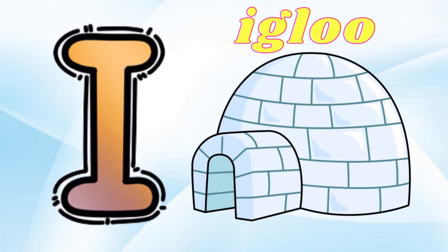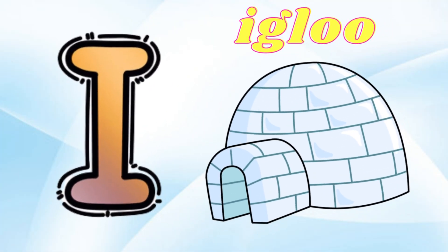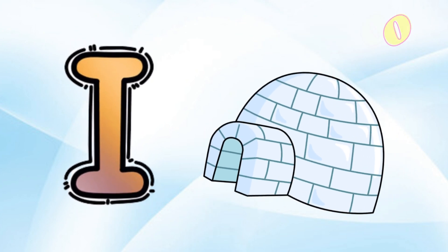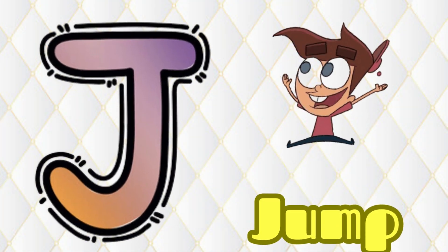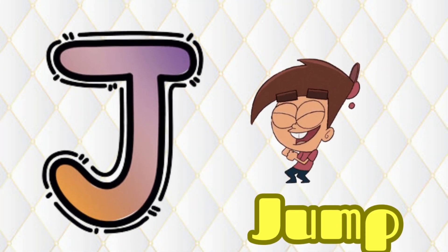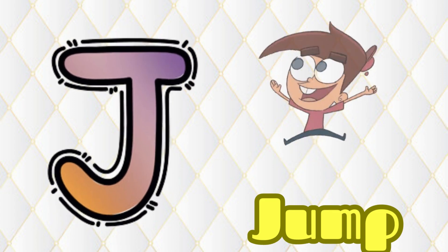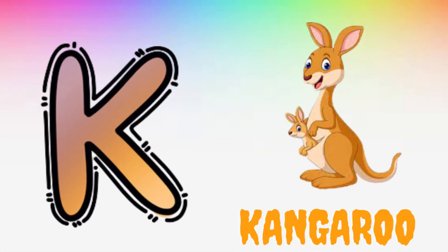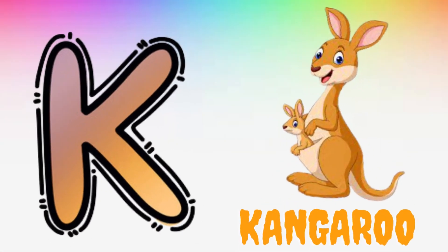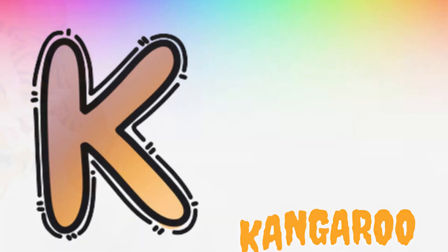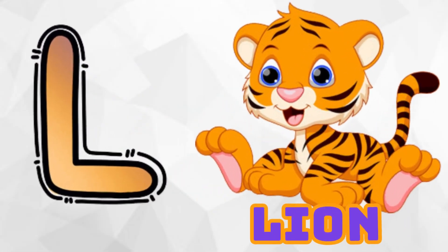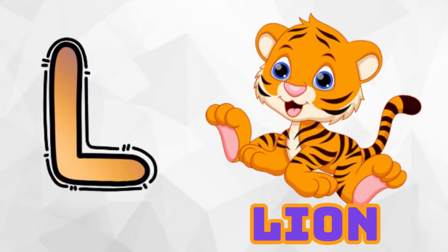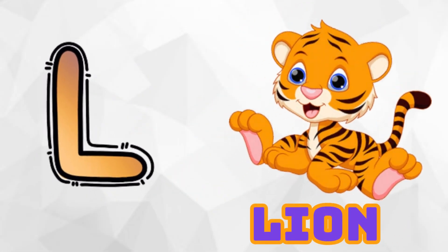I is for Igloo, I-I-Igloo. J is for Jump, J-J-Jump. K is for Kangaroo, K-K-Kangaroo. L is for Lion, L-L-Lion.